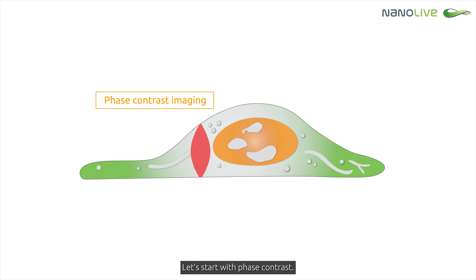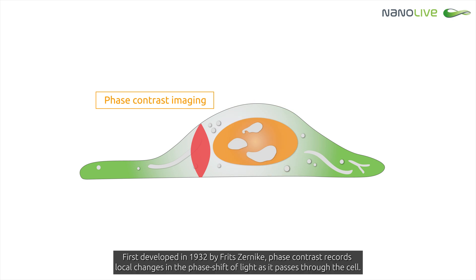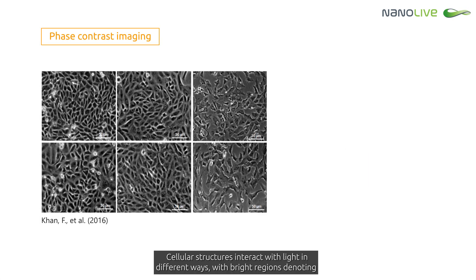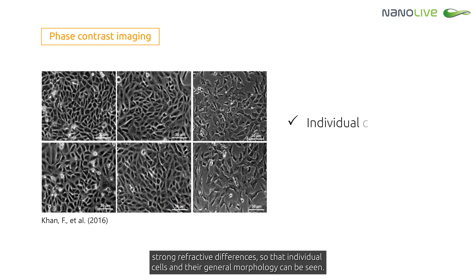Let's start with phase contrast. First developed in 1932 by Fritz Zernike, phase contrast records local changes in the phase shift of light as it passes through the cell. Cellular structures interact with light in different ways, with bright regions denoting strong refractive differences, so that individual cells and their general morphology can be seen.